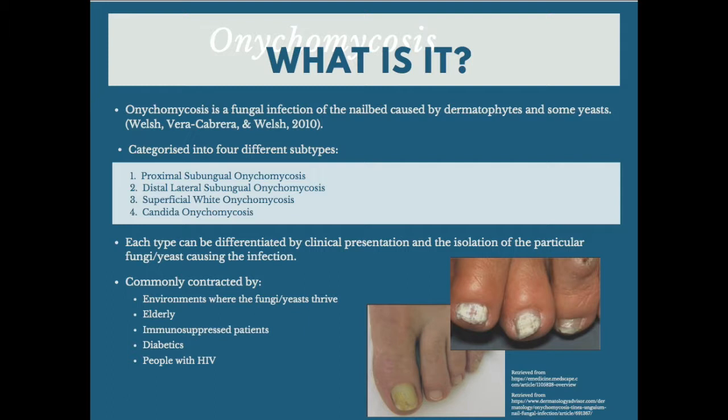Onychomycosis can be split into four different subtypes. These include proximal subungal onychomycosis, distal lateral subungal onychomycosis, superficial white onychomycosis and Candida onychomycosis. Each can be differentiated by clinical presentation and the isolation of a particular fungi or yeast causing the infection.